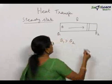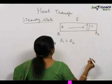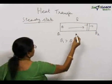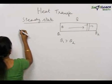In steady state, the quantity of heat crossing any section will be constant. In steady state, the quantity of heat crossing any section will be same.